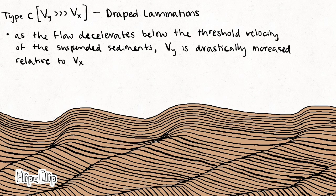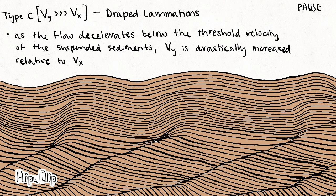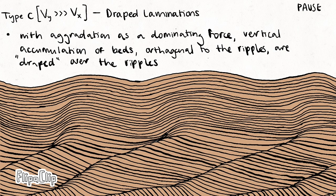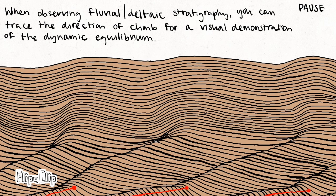Now we transition into type C, or draped laminations. These are not technically ripples, but rather expressions of ripples in sediment blankets overlying actual ripples. These form when the flow descends below the threshold velocity of the suspended sediments, effectively forcing the system out of equilibrium to be dominated solely by aggregation. Watch the red lines progress upwards, following the direction of ripple propagation.